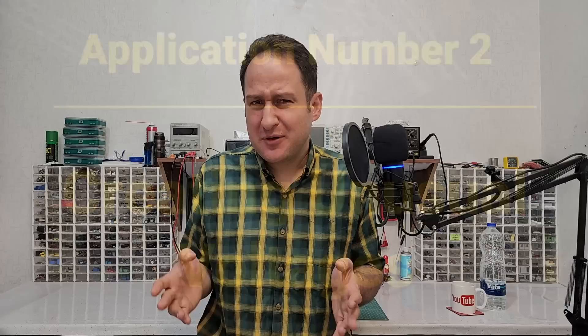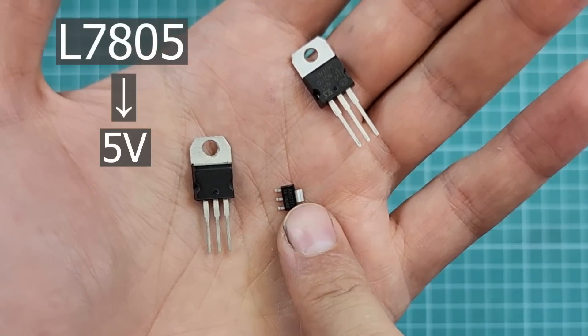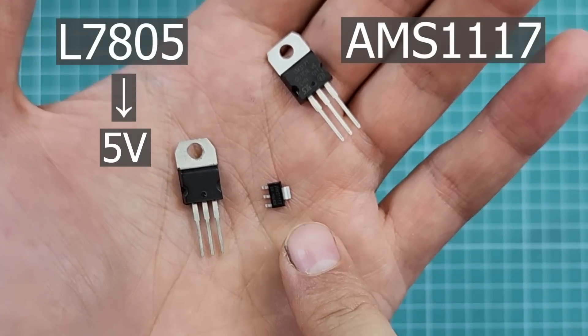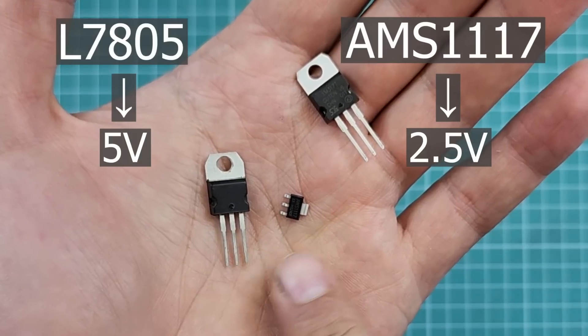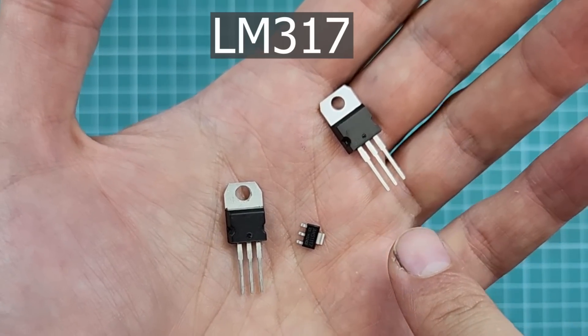Application number two: creating unusual voltages. Regulators are divided into two main groups according to their output voltage. The first group is regulators with a fixed output voltage. They can provide voltages like 2.5 volts, 3.3 volts, 5 volts, 9 volts, etc. The second group is the regulators with adjustable output voltage. This is L7805 that provides 5 volts, and this is AMS1117 2.5 volts which offers 2.5 volts. These are fixed voltage regulators, but this one, the LM317, is an adjustable voltage regulator.